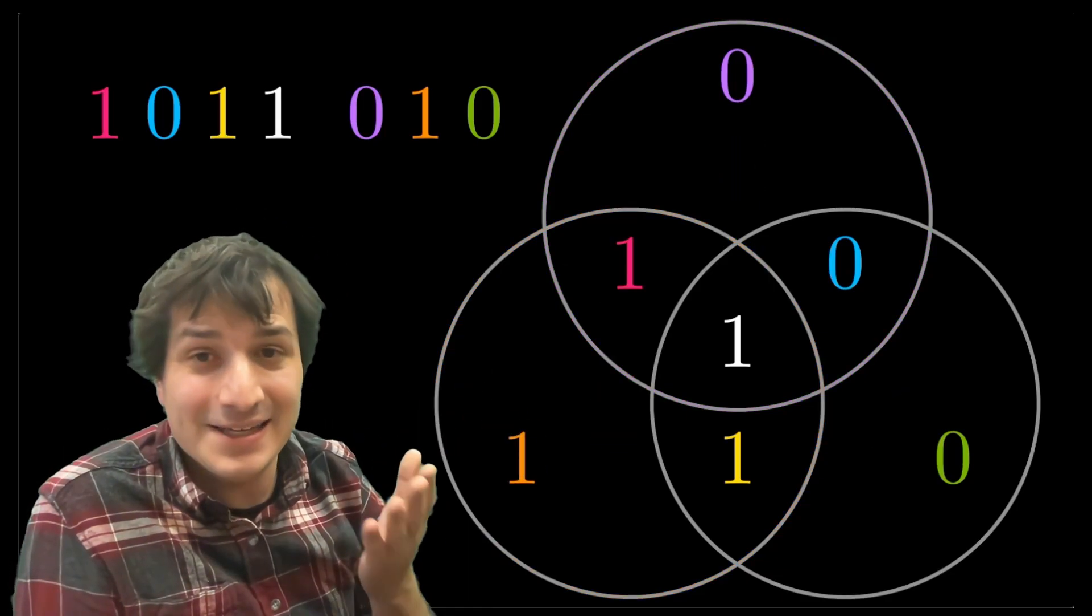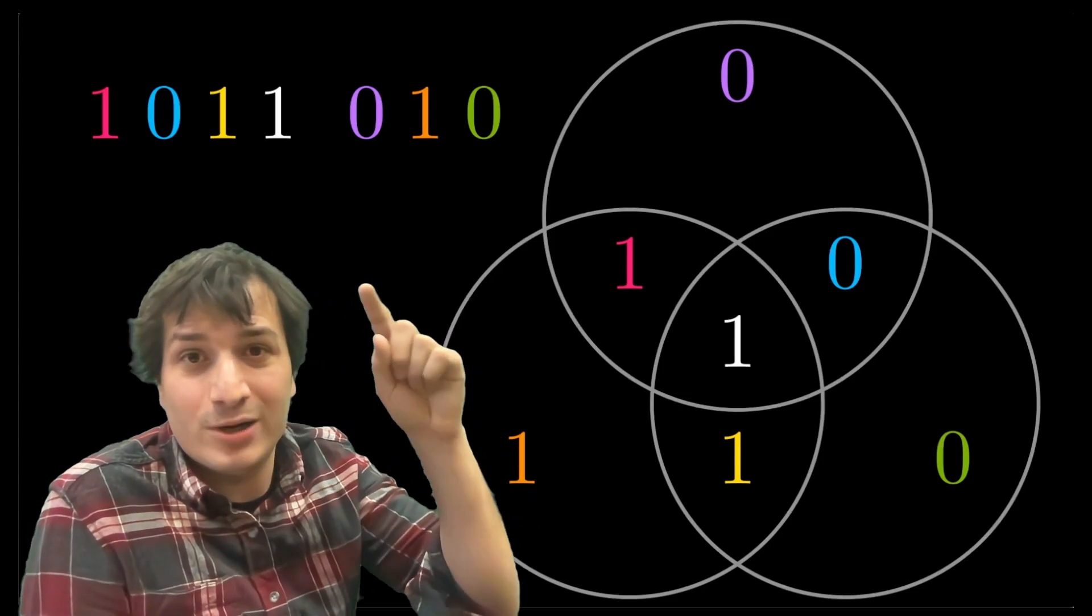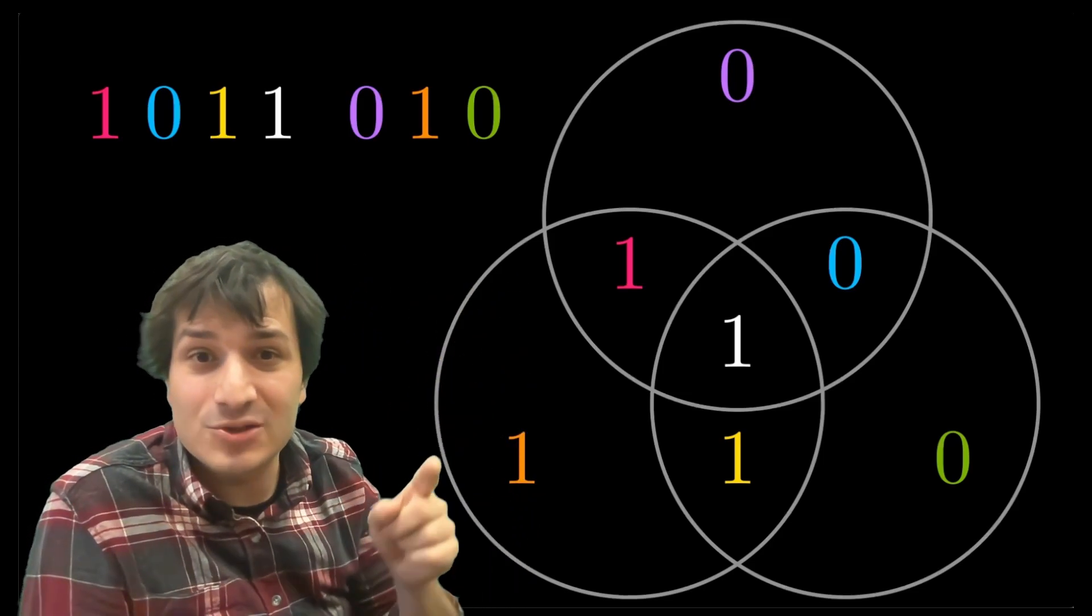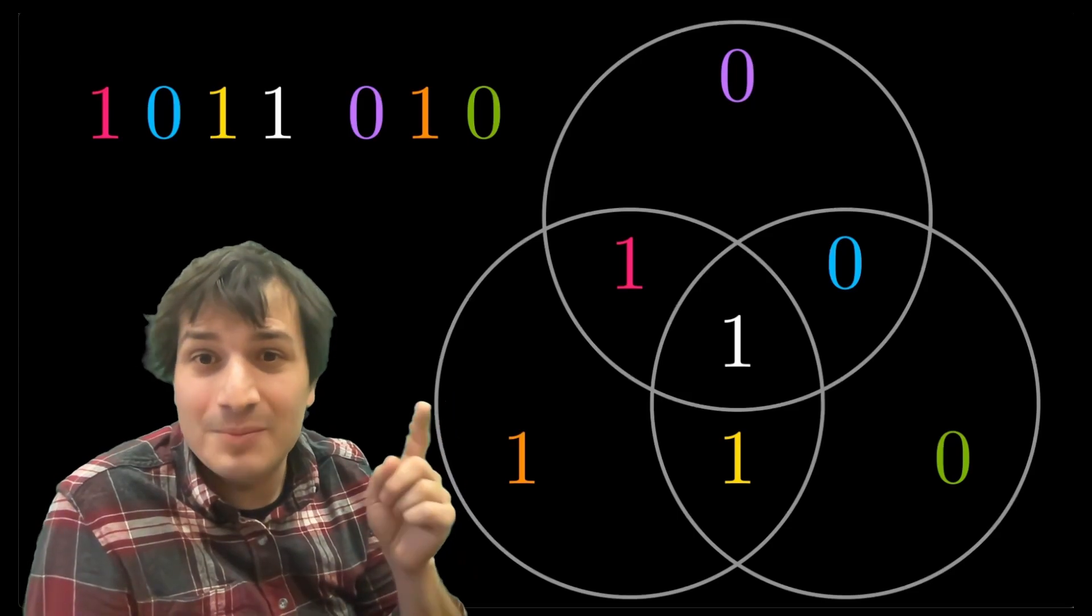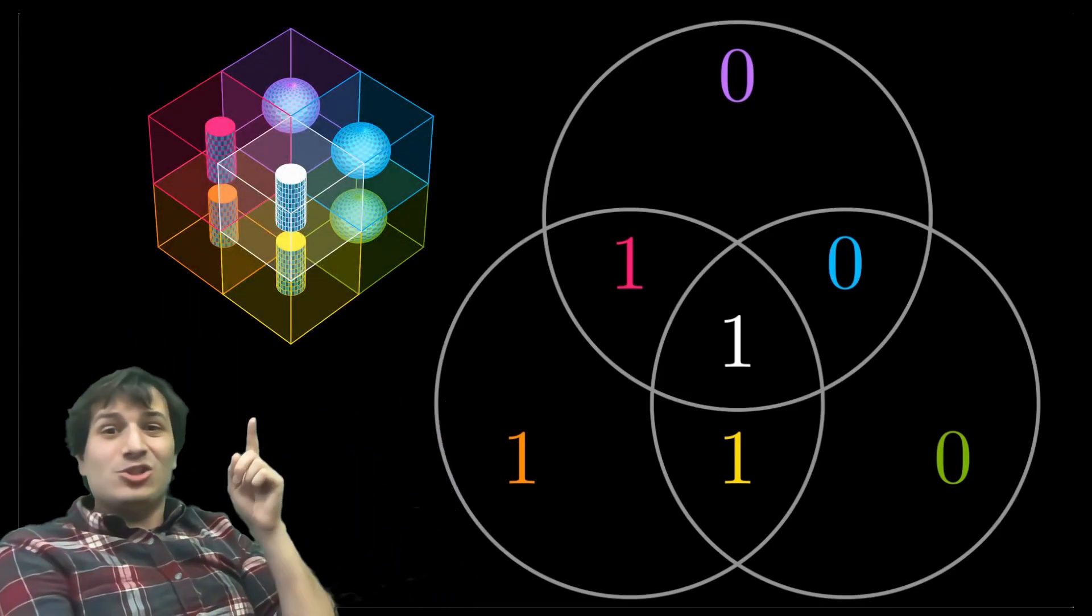And I'll leave you with one thing that I teased in the introduction, which is that you can think of this message, 1011010, as coming from this triangle of numbers, which is written into three circles. But you can also think about it in 3D as numbers living inside a two by two cube.